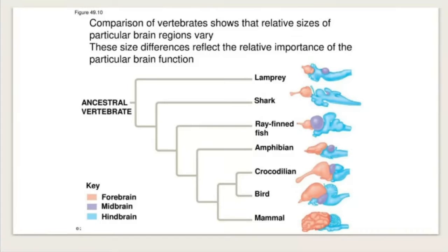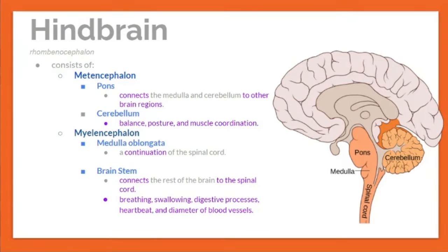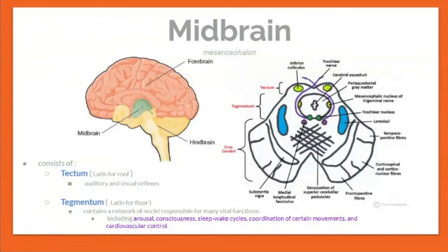The hindbrain, or rhombencephalon, consists of the metencephalon and myelencephalon. The metencephalon contains the pons and cerebellum; the myelencephalon contains the medulla oblongata. The pons connects the medulla and cerebellum to other brain regions. The cerebellum controls balance, posture, and muscle coordination. The medulla oblongata is a continuation of the spinal cord, and the brainstem connects the rest of the brain to the spinal cord, controlling breathing, swallowing, digestion, heartbeat, and blood vessel diameter.